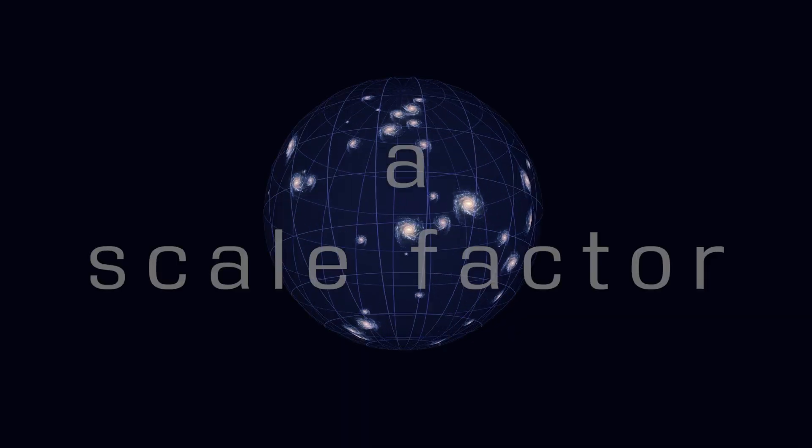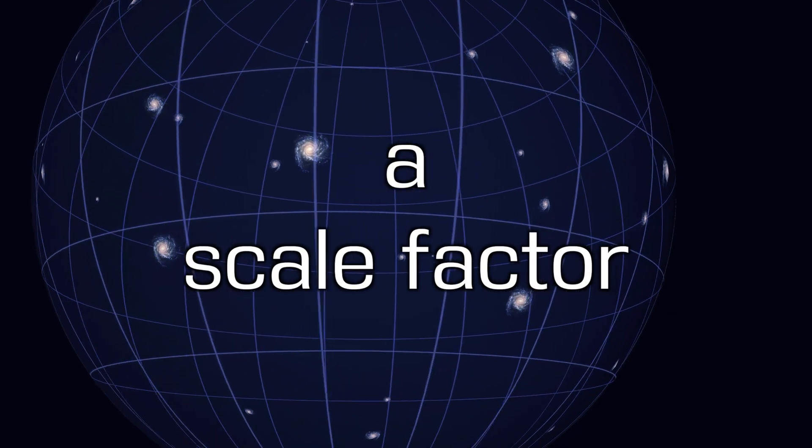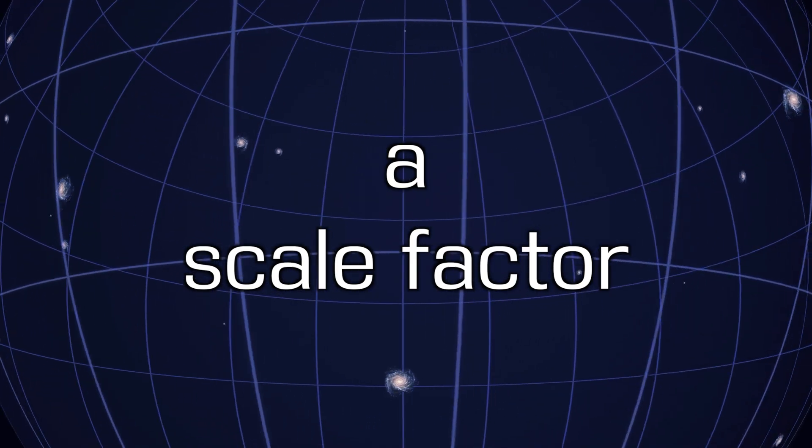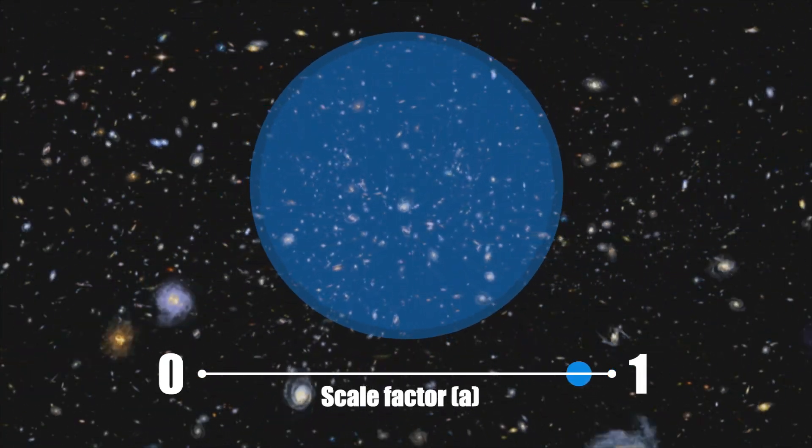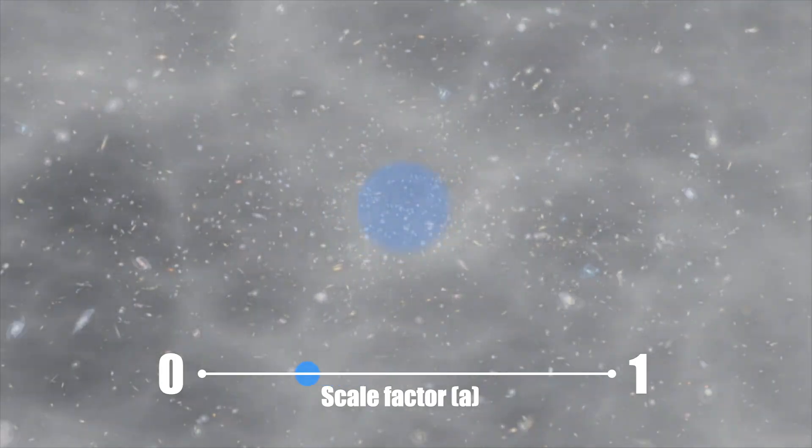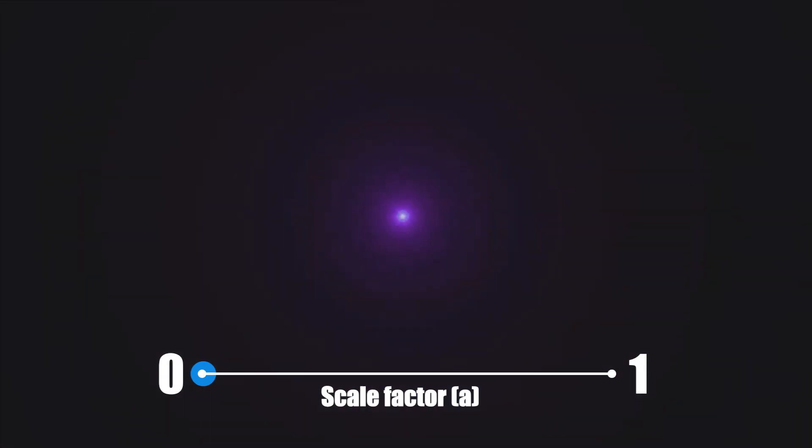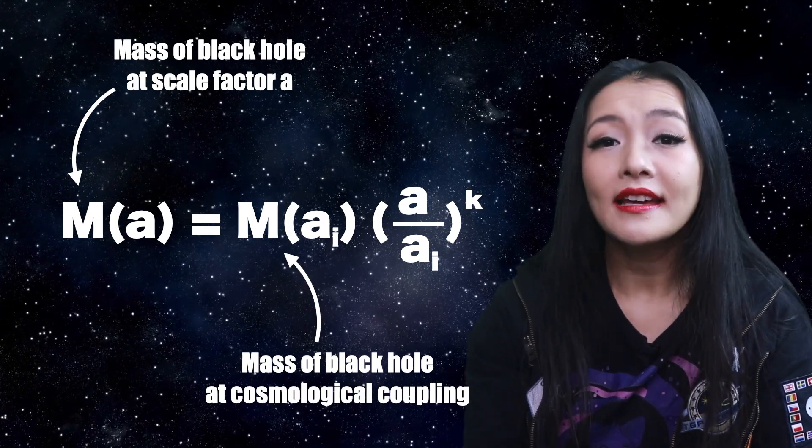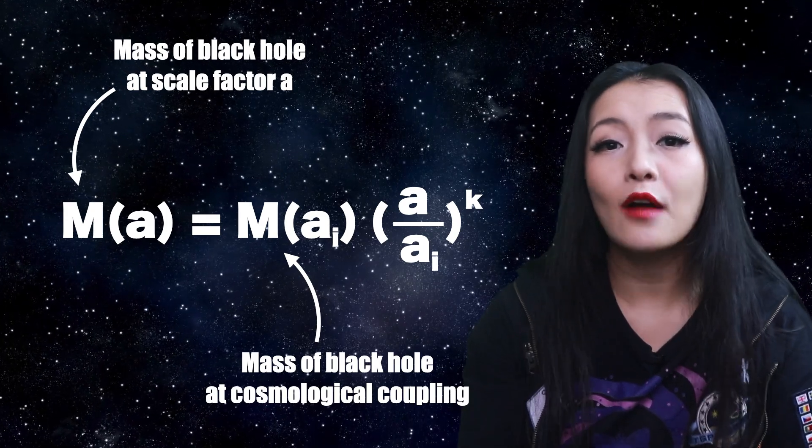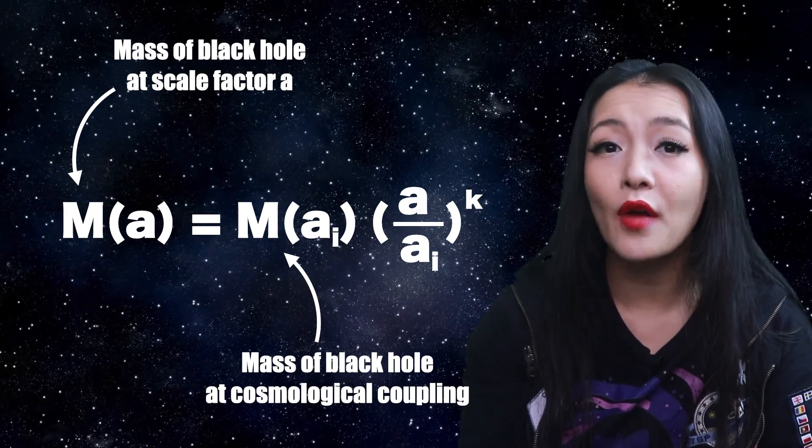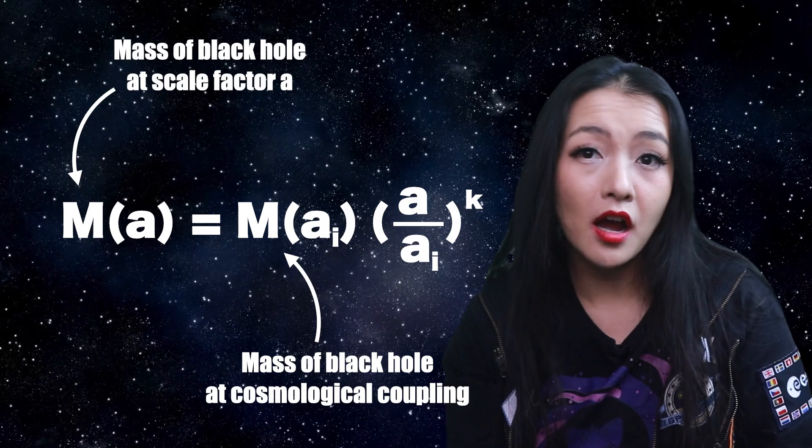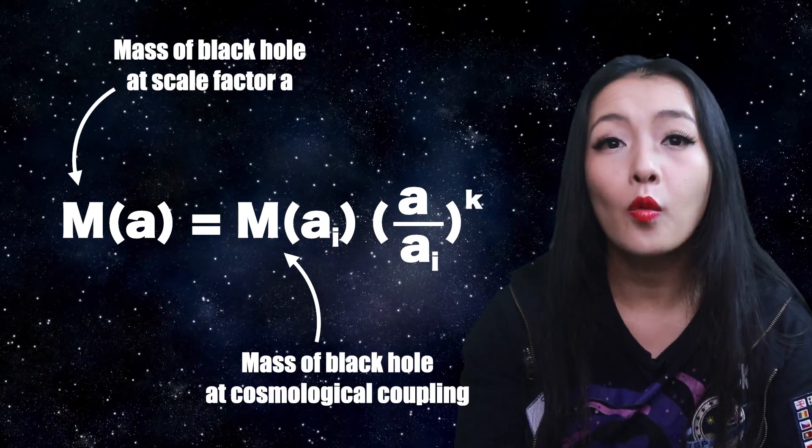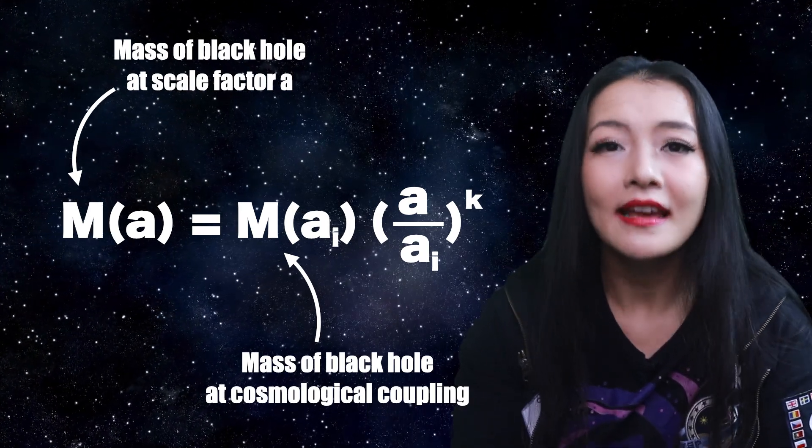Recall that this is a measure of how much the universe has expanded, normalized to today. So the scale factor today is a equals one, and at the Big Bang, the scale factor was a equals zero. a_i is the scale factor at which cosmological coupling happens. So M(a_i) is the mass of the black hole when the cosmological coupling happens.